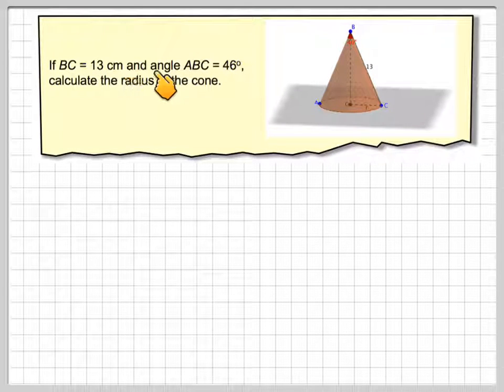If BC is 13 centimeters and the angle ABC is 46 degrees, calculate the radius of the cone.